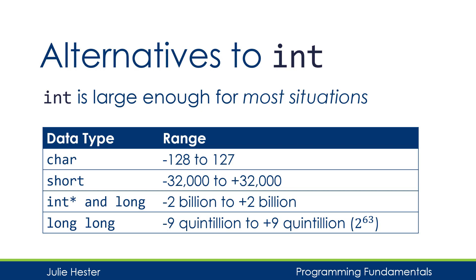Now char isn't something that we really think of as an integer, but technically it is because it is storing an integer value. It has a very small range because it only uses one byte of storage. The next data type is called short, and a short uses two bytes of memory, so its range is from about negative 32,000 to positive 32,000.